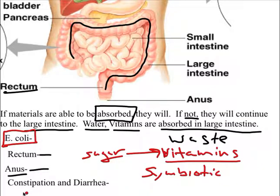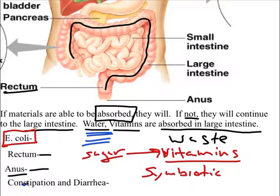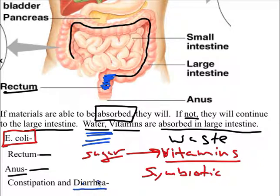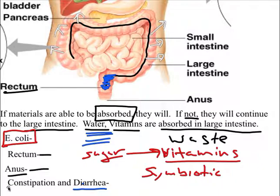E. coli gives us vitamins; we give them food and shelter — that's their job in the large intestine. The large intestine's job is to absorb water. If it doesn't absorb water, the water stays in the large intestine and rectum, causing diarrhea. Conversely, if too much water is absorbed and none remains in the large intestine, that causes constipation.